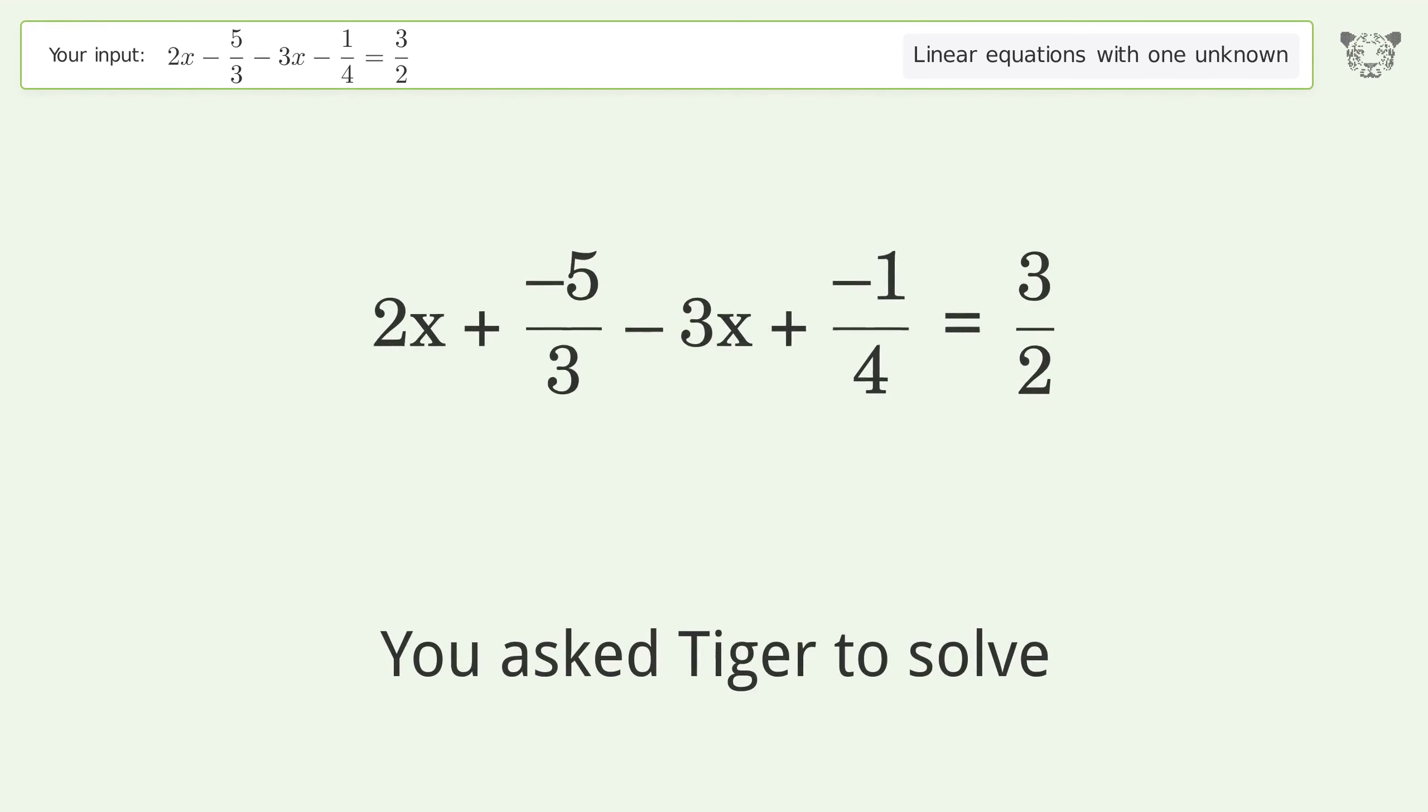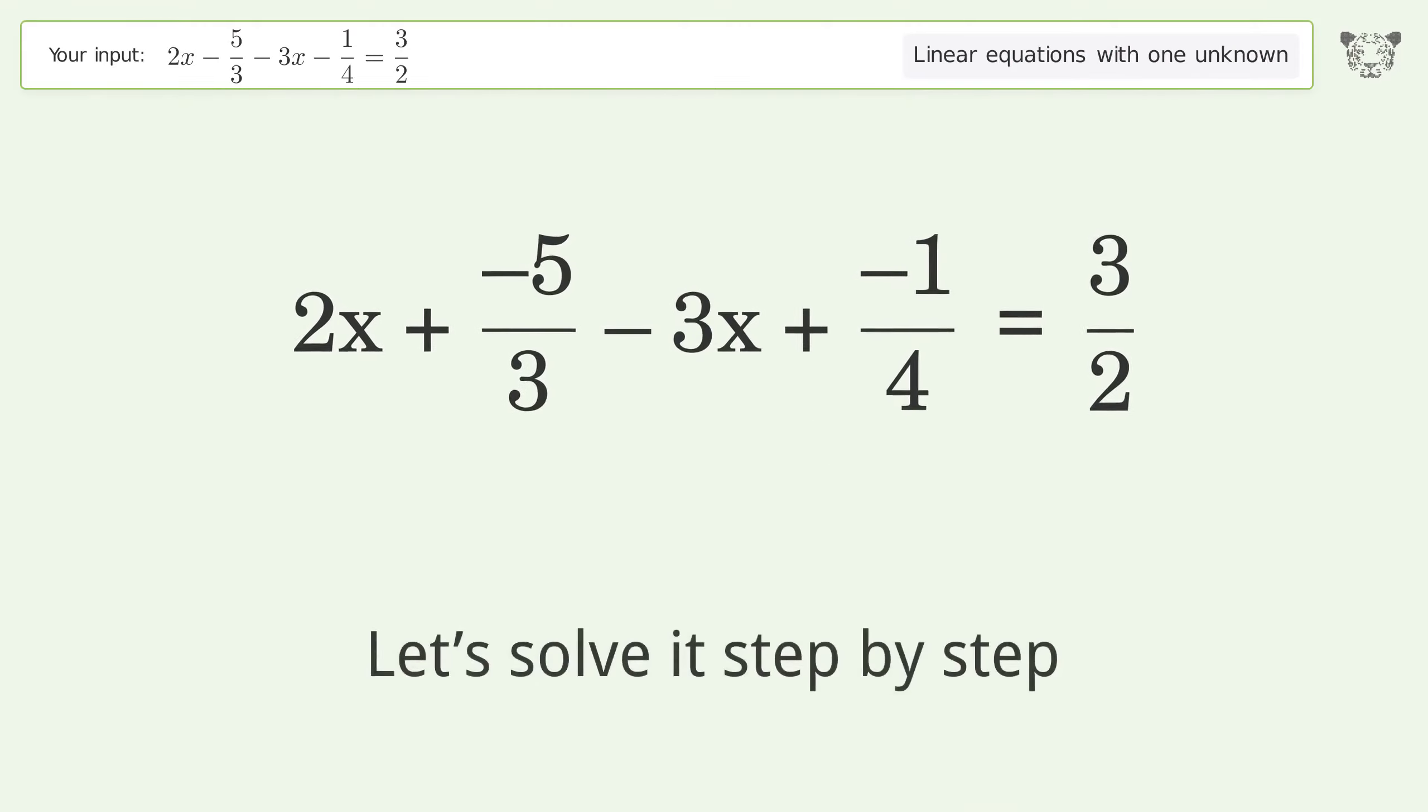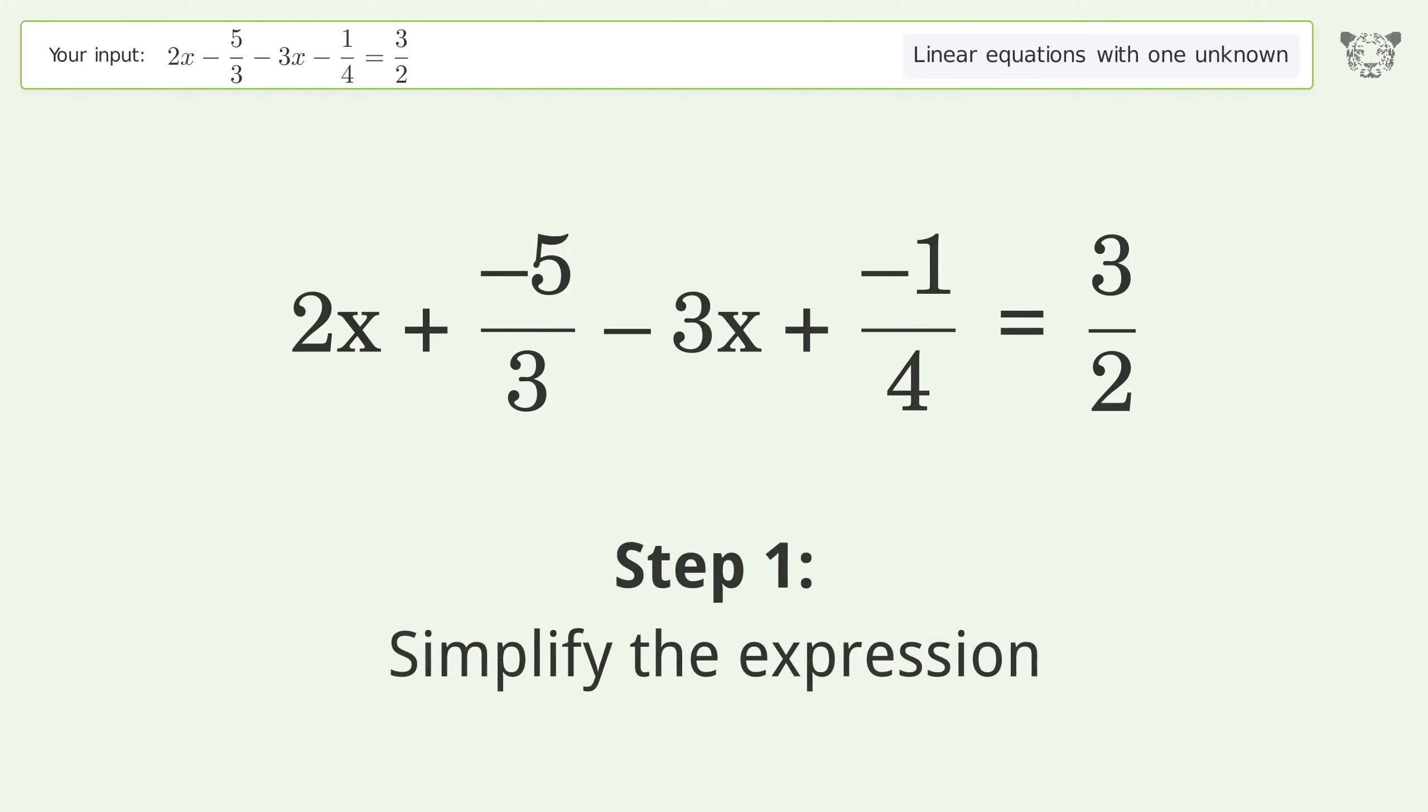You ask tiger to solve this. It deals with linear equations with one unknown. The final result is x equals negative 41 over 12. Let's solve it step by step. Simplify the expression. Group like terms.